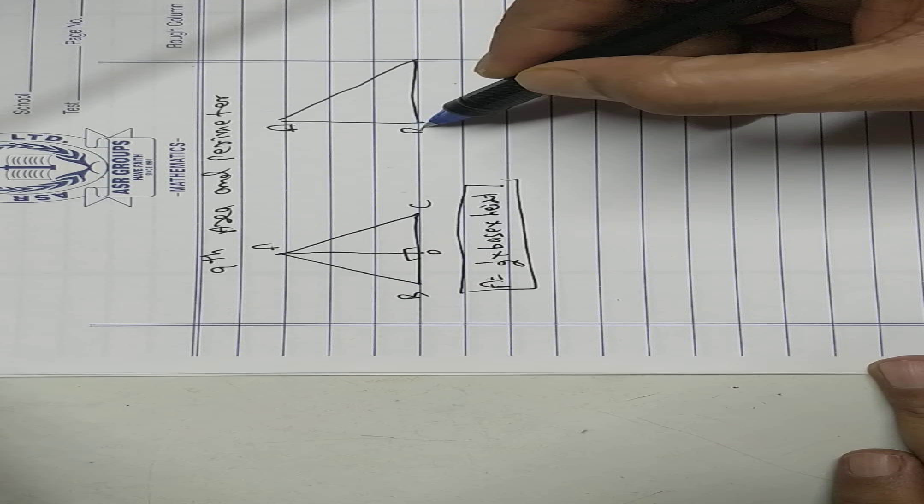If it is a right angle triangle, this can be base, this can be height or this can be base, this can be height. So area half into AB, base means half into the side containing right angle triangle.